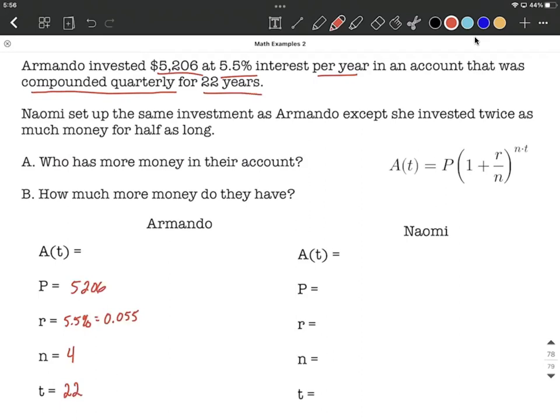We're going to fill all that information in just a second, but we also need to do one for Naomi. Naomi set up the same investment as Armando except she invested twice as much money for half as long. So we're going to double that - take $5,206, double it, and get $10,412 that Naomi invested.